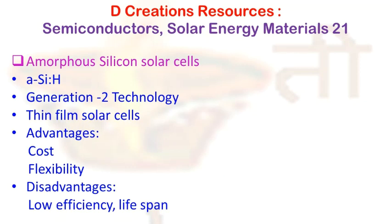In 1969, it was first shown by Chittik, Alexander, and Sterling that when amorphous silicon is produced by RF glow discharge decomposition of silane gas (SiH4), it shows a considerable level of photoconductivity.